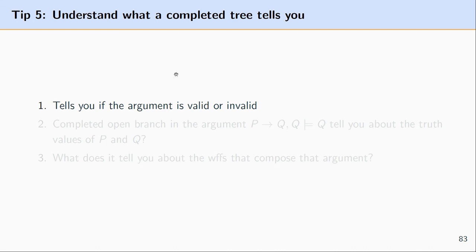One of the things that a tree can tell you is whether or not an argument is valid or invalid so you want to understand like let's say you decompose a tree you're testing an argument if P then Q, Q therefore Q you want to understand what this tree tells you and you want to understand it not only if it tells you if it's valid or invalid but also what let's say a completed open branch will tell you.